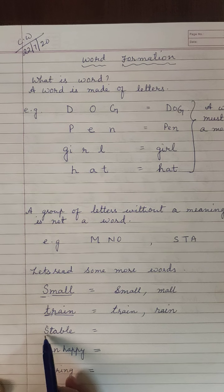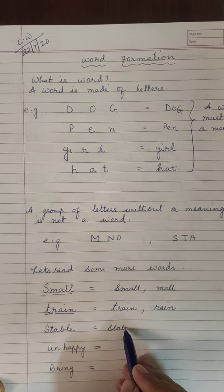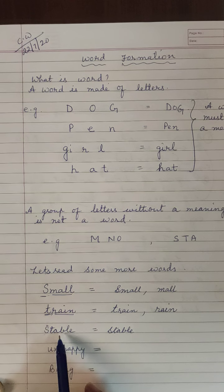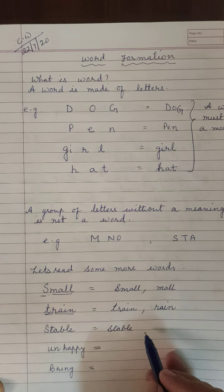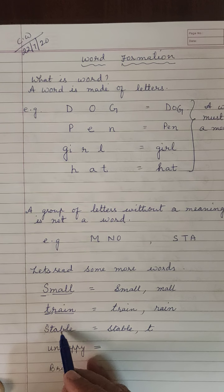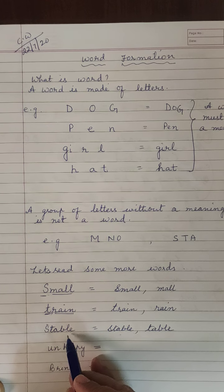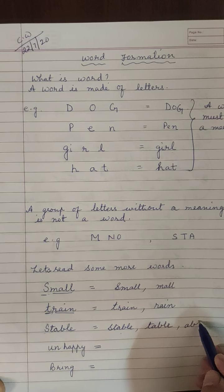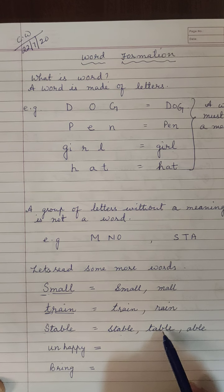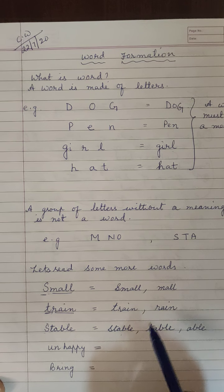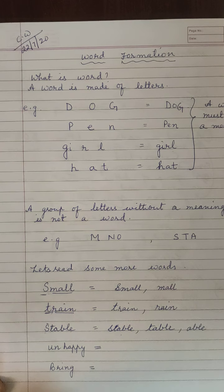Next, 'stable' — S, T, A, B, L, E. This is one word with 6 letters. Stable means fixed. From these 6 letters we can make multiple words. We can make 'table' — a table is a thing. We can also make 'able' — meaning you are able to do something, having capability. So from the word 'stable' we get three words: stable, table, and able.